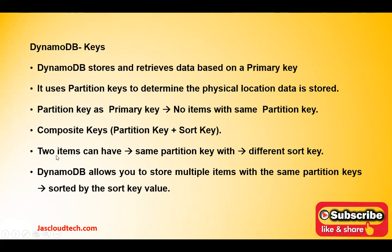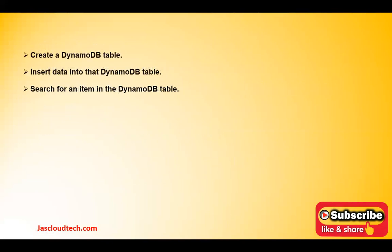In DynamoDB, two items can have the same partition key, but their sort key will be different. DynamoDB allows storing multiple items with the same partition key as long as they have a different sort key value. This can be a little confusing, but once we see the practical demo we'll understand the difference between the partition key and the sort key, and how combining them creates a composite key. In today's video I'll show a practical demo: creating a DynamoDB table, inserting records, and searching using query and scan.